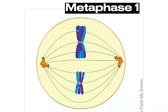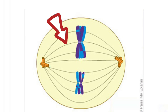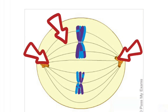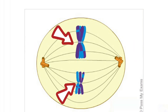After prophase 1, the next phase is metaphase 1. During metaphase 1, spindle fibers begin to extend from the centrioles at one end of the cell to the opposite end of the cell. The sister chromatids are now located at the equator and are attached to the spindle fibers at their centromere.